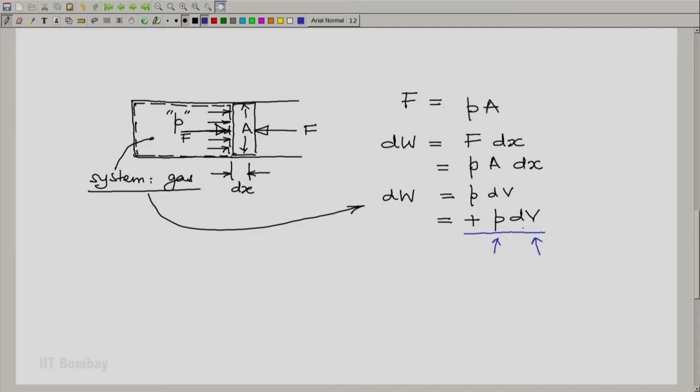The P dV product, because dV will be a positive number, volume will increase, dW will be positive. The system will do work on the surrounding.